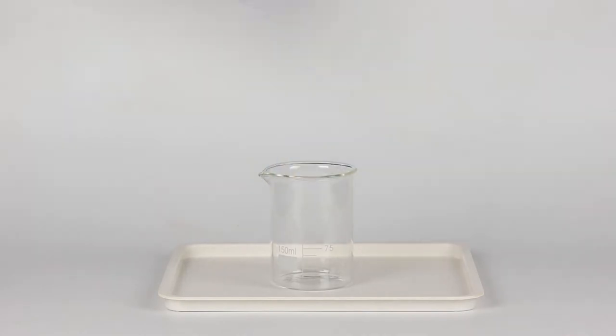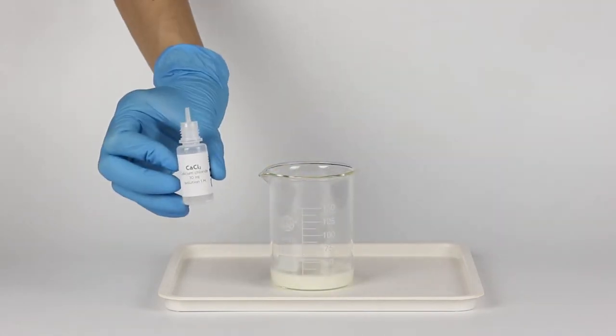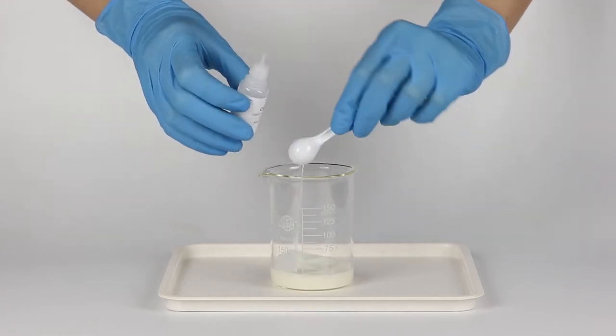Pour approximately 25 milliliters of milk into the beaker and add two big spoonfuls of calcium chloride solution.